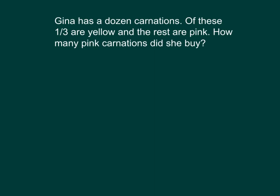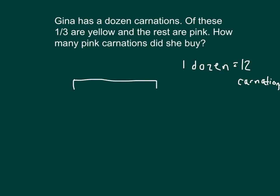Let's start with this problem. Gina has a dozen carnations. Of these, one third are yellow and the rest are pink. How many pink carnations did she buy? We know that one dozen equals 12. So we have 12 carnations total, and that is our whole amount. If we are looking at a tape diagram, 12 represents the whole — that's the 12 carnations.